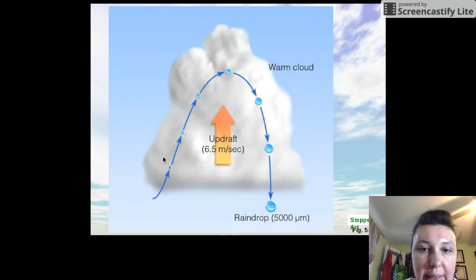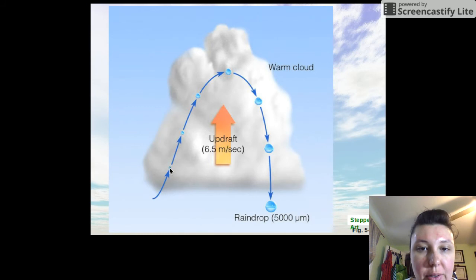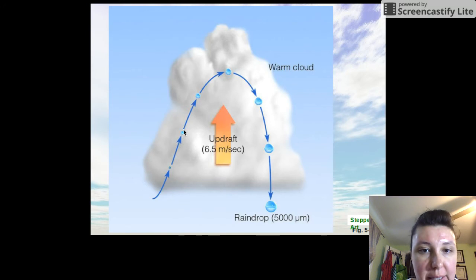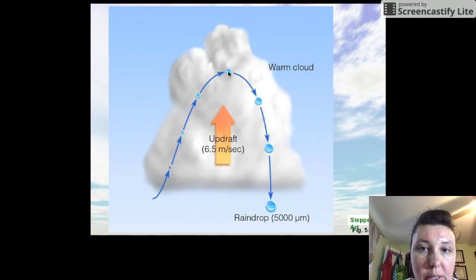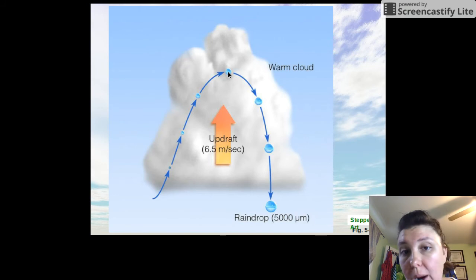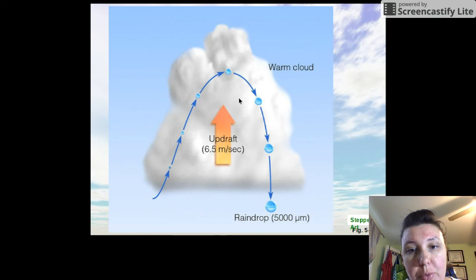This image shows a small condensation nuclei with an updraft pushing it up through the cloud. It is coalescing, and as it's pushed up it's hitting water droplets — colliding and gaining mass, increasing in size. Eventually, the droplet grows from a cloud droplet to a rain droplet, exceeding the updraft holding it up, so gravity begins to pull it down.